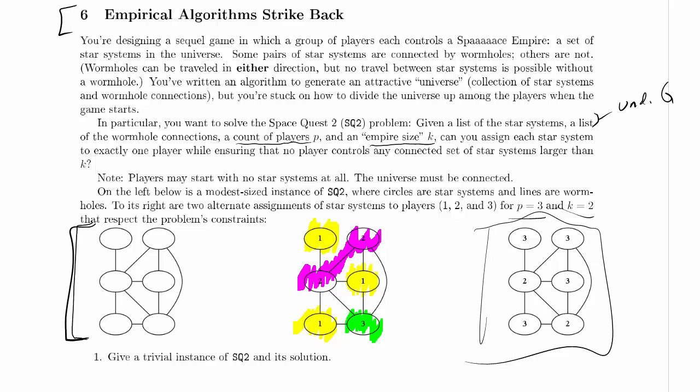On the right here, I kind of don't want to use pink again because it's too dark, but I'm going to use it because I started with that. So player 2 controls this set of connected star systems. Player 3's got a whole bunch of star systems, but they've got two that are only size 1, and one set of star systems that's connected that is of size 2. So that does not violate the constraints of the problem. It turns out we didn't even need three players. We just needed two.